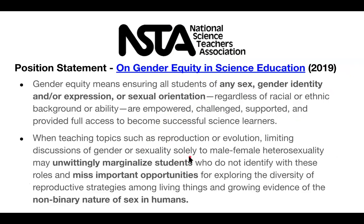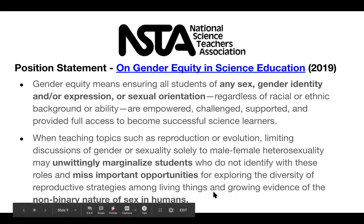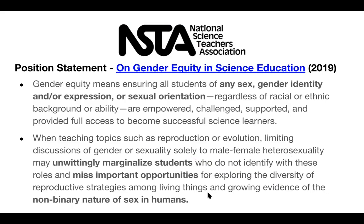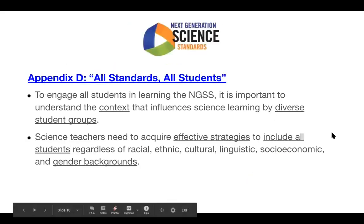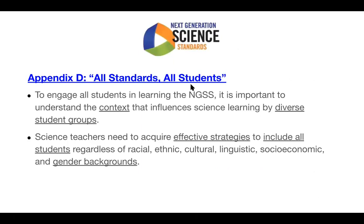The NSDA statement also calls out that when teaching about reproduction or evolution, we may unwittingly marginalize students who don't identify with heterosexual roles if we teach that exclusively, and we may miss important opportunities to explore the diversity of reproductive strategies among living things and the growing evidence of the non-binary nature of sex in humans. Our NGSS standards also call this out in Appendix D, All Standards, All Students, stating that we need to understand the context that influences science learning by diverse student groups, and that teachers need effective strategies to include all students, regardless of, among other things, gender backgrounds.